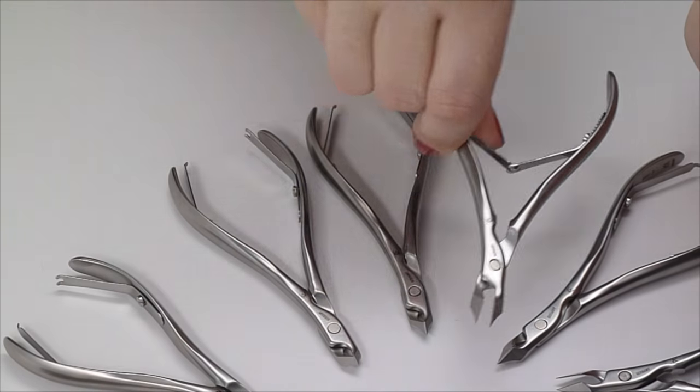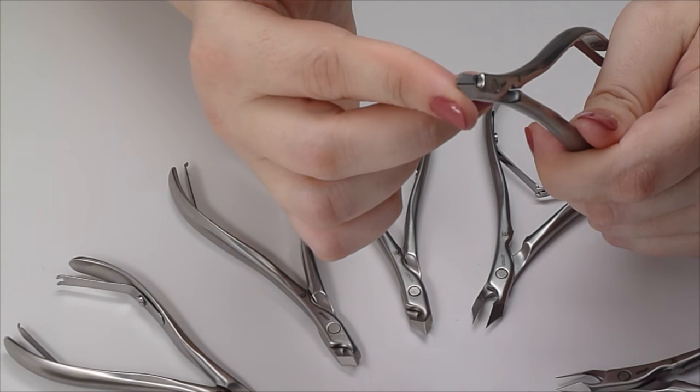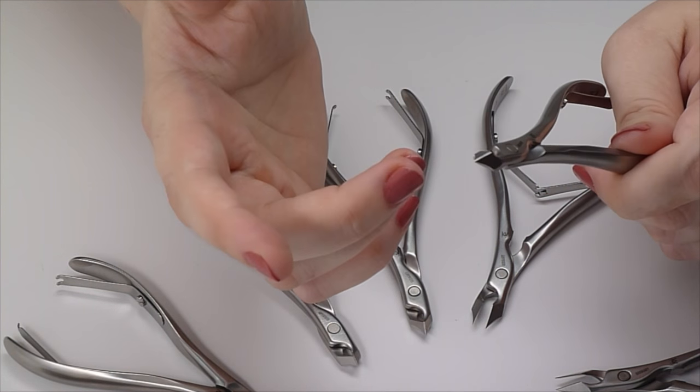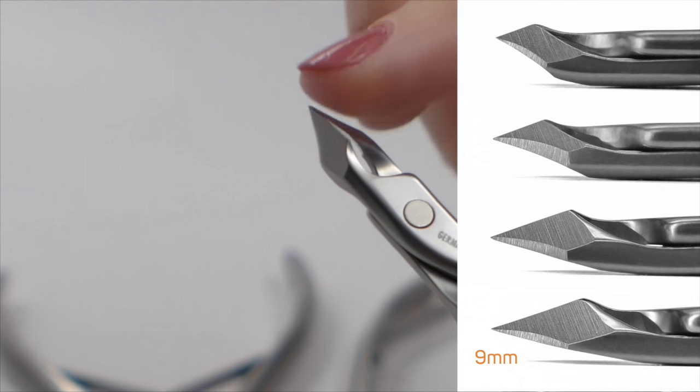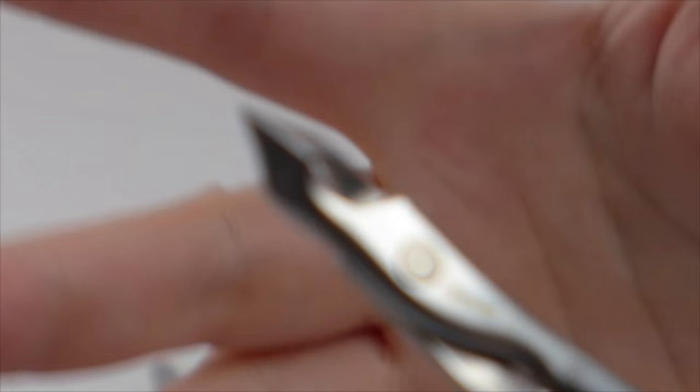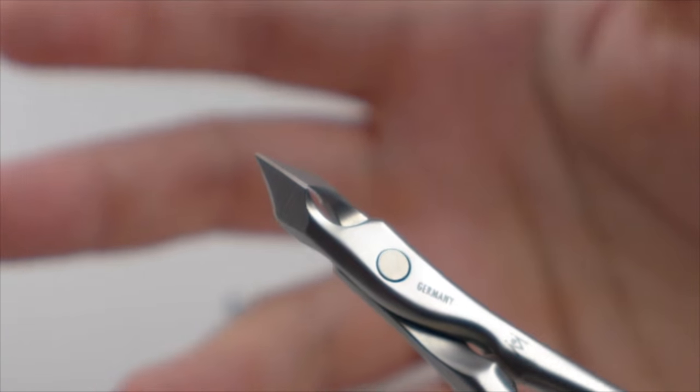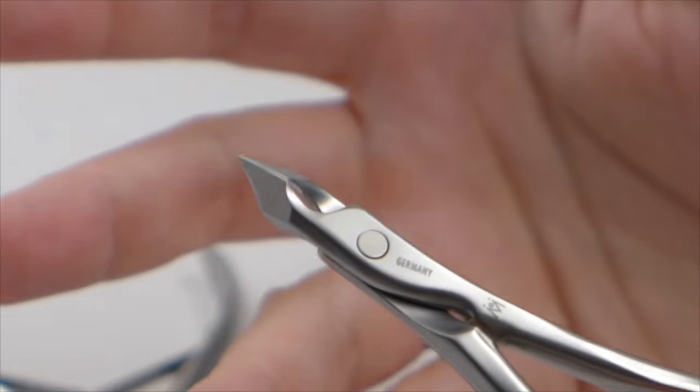Nine millimeter jaws are the largest nipper available. These are referred to as a full jaw or a pedicure cuticle nipper. This nipper lasts the longest because the added material in the jaw can be fully sharpened more times than all the other shorter lengths. This length can sometimes be difficult to use on small fingers or tiny toes however.